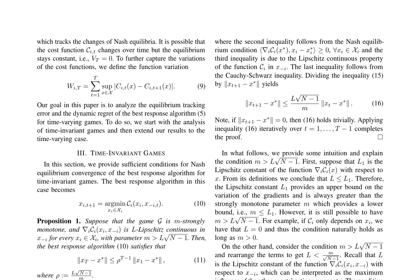The analysis of the best-response algorithm for time-varying games focuses on the equilibrium tracking error and dynamic regret. It begins by examining time-invariant games, providing sufficient conditions for Nash equilibrium convergence using the best-response algorithm. The algorithm is defined as Xi(T+1) equals argmin Xi element of Xi, Ci(Xi, X_{-i,T}).